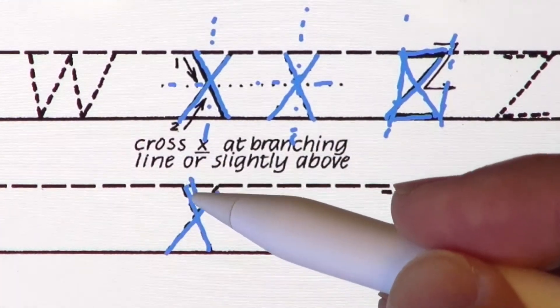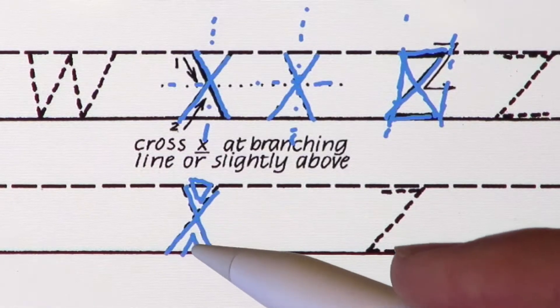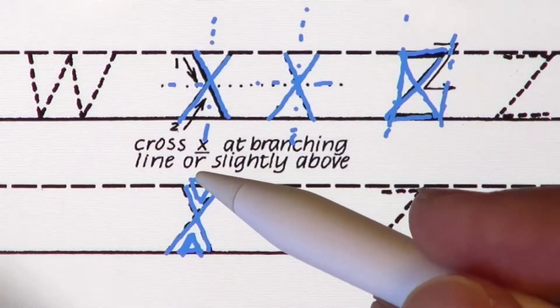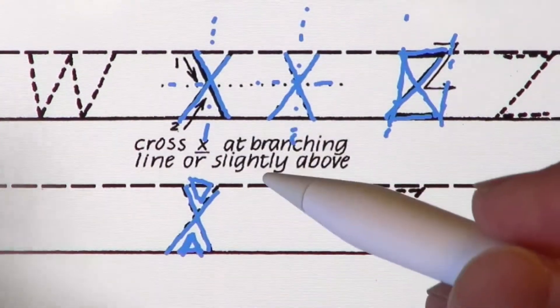Notice the counter shapes here. There's that triangle and this triangle. If you'd like, you can make this triangle slightly smaller than this triangle.